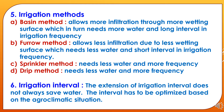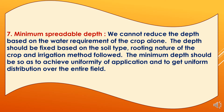The sixth criterion is irrigation interval. Extension of the irrigation interval does not necessarily save water; the interval has to be optimized based on the agro-climatic situation. The seventh criterion is minimum spreadable depth. We cannot reduce depth based on crop water requirement alone — it should be fixed based on soil type, rooting nature of the crop, and irrigation method to be followed, ensuring uniformity of application and uniform distribution over the entire field.